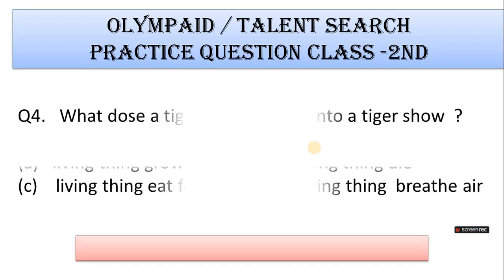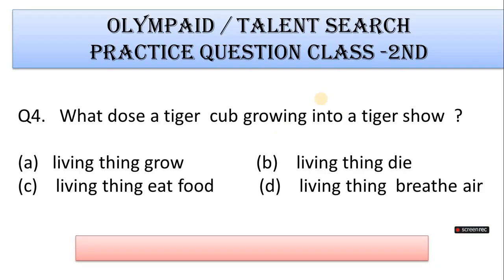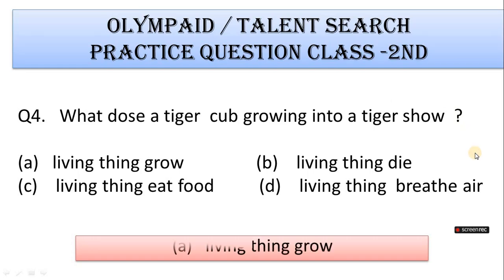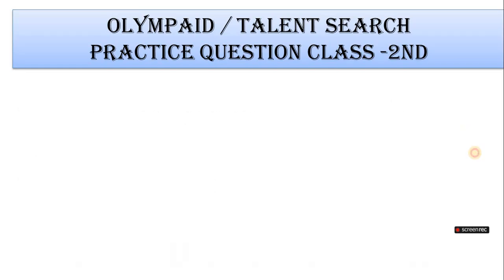Next question number 4: What does a tiger cub growing into a tiger show? A. Living things grow, B. Living things die, C. Living things eat food, D. Living things breathe air. Correct answer is Option A. Living things grow.